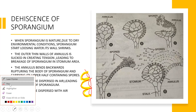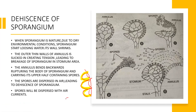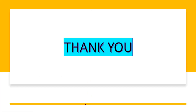The sporangium dehisces to liberate the spores. The spores, if we see their shape, are rounded. Each spore has a thin area called the tri-radiate ridge, and the external wall is thick. When spores fall on a suitable substratum and find suitable environmental conditions, they start germinating for the formation of the gametophyte. This is all about the structure of the sporangium, liberation of spores, spore structure, and formation of the gametophyte — we will watch the next stage in the next video. Thank you for watching; if you liked this video, please like, share, and subscribe.